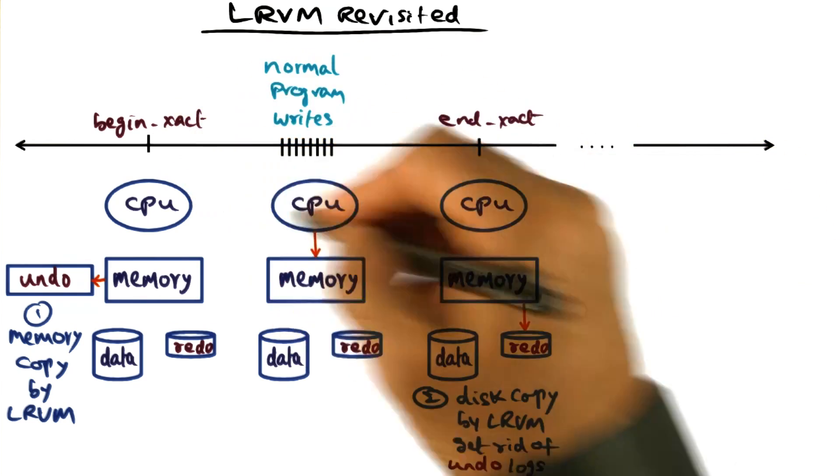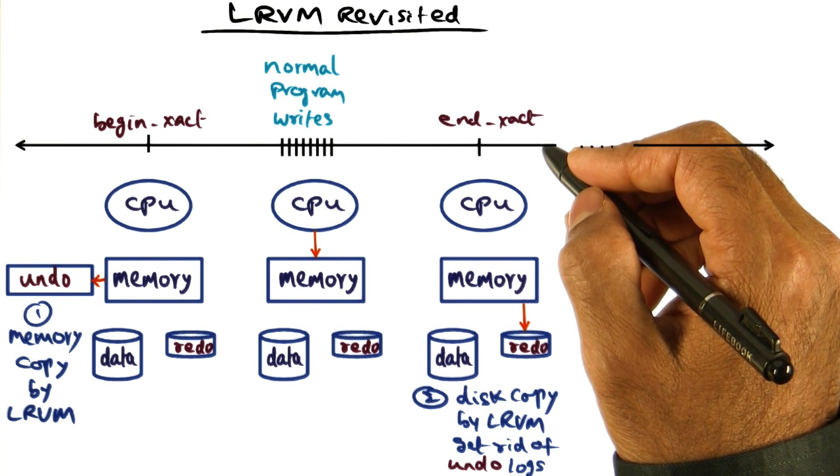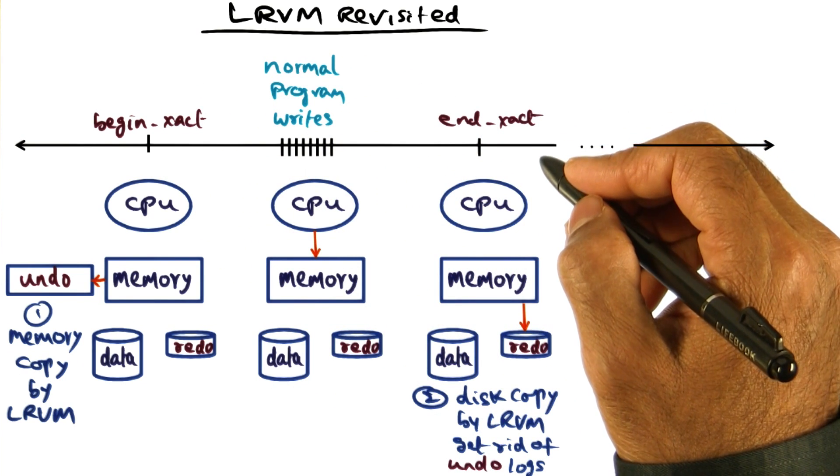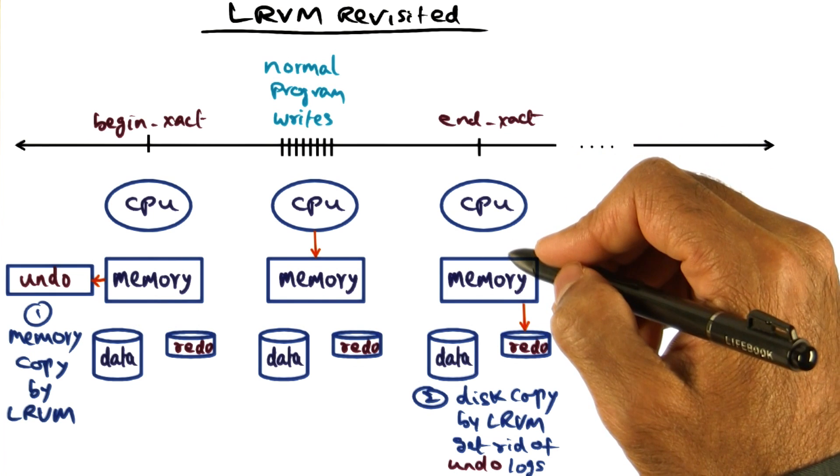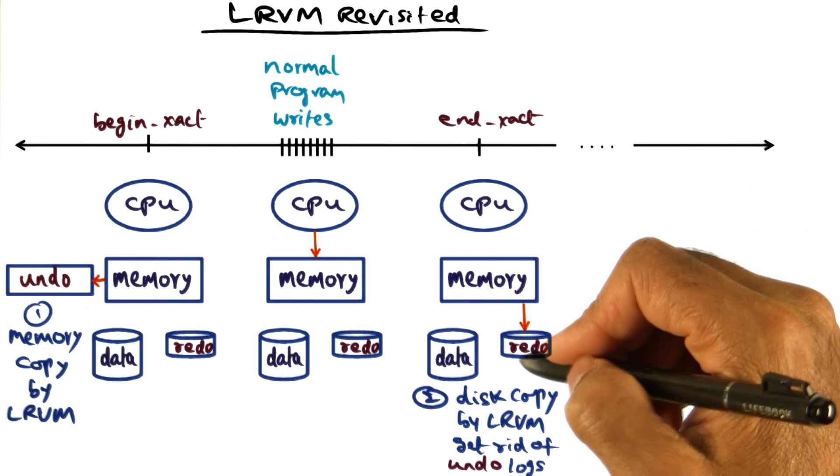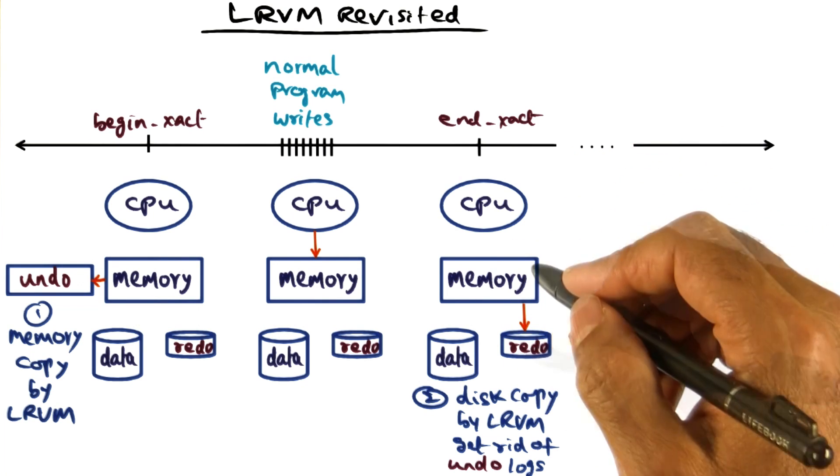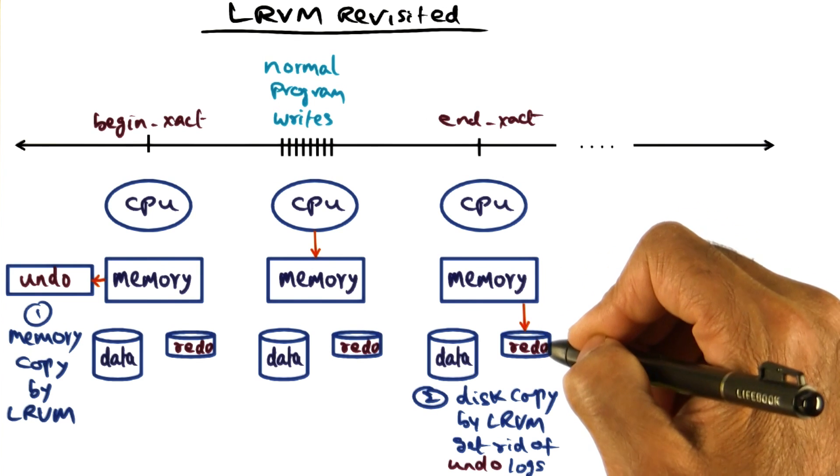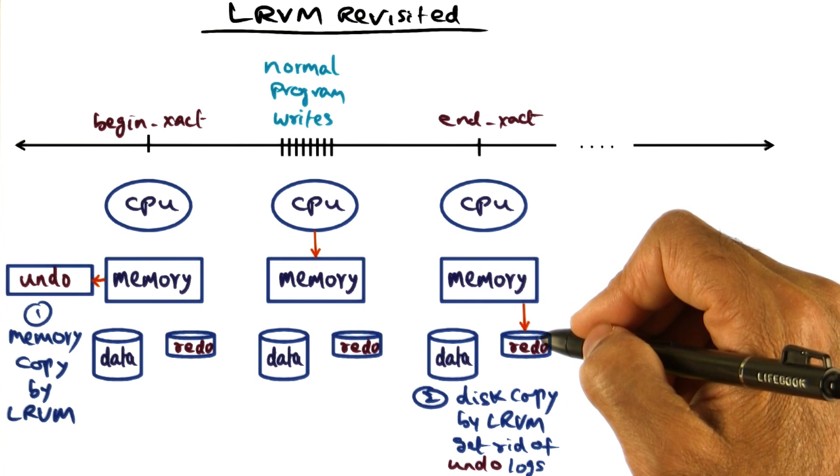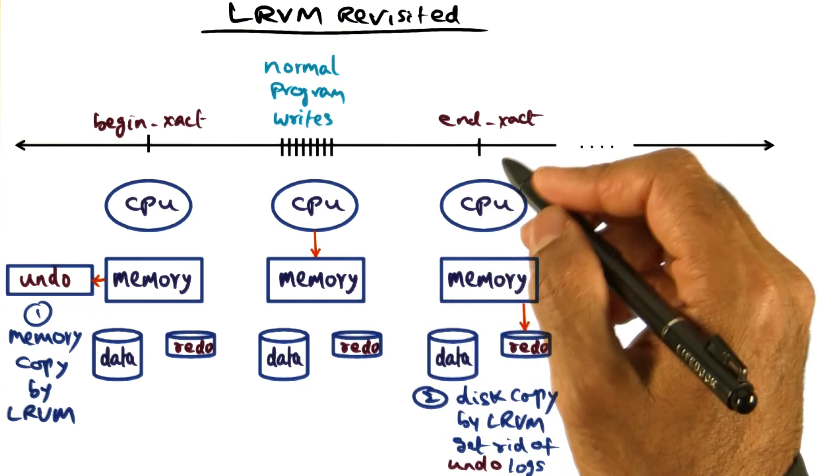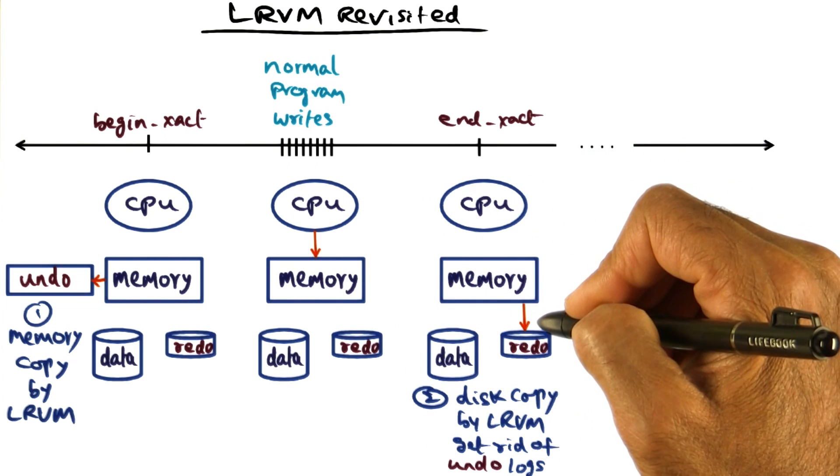In other words, the application is hoping that there won't be any failures that will result in all the changes that is recorded in memory not being forced to the disk. So LRVM is going to write out the redo log as a background activity. And the hope is that there won't be any system crash during the time that it takes for it to do.